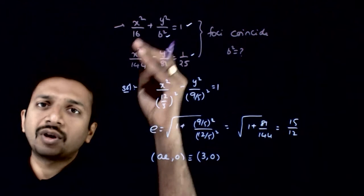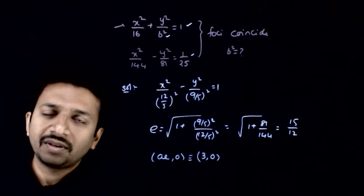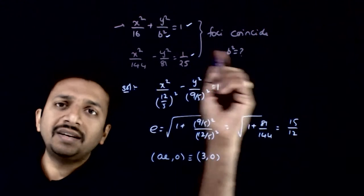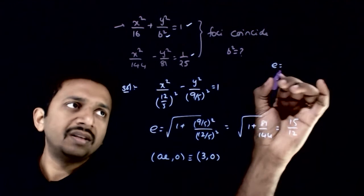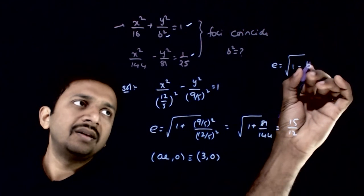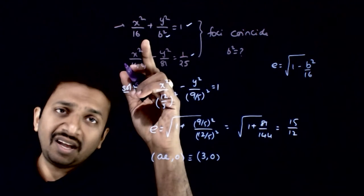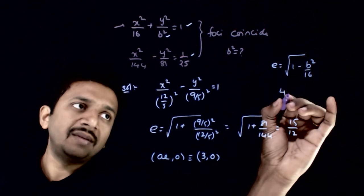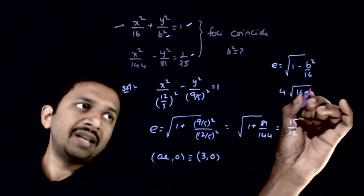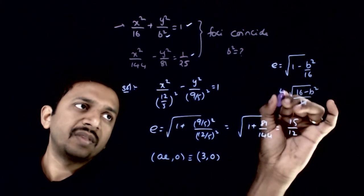This should be the same as the focus of the ellipse. What is the focus of the ellipse? To find that, the eccentricity equals root of 1 minus b²/16, and the foci is (ae, 0). That is 4 times root of (16 - b²)/4.